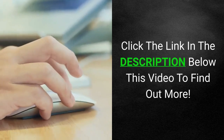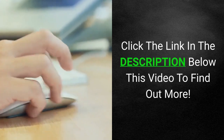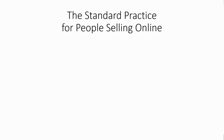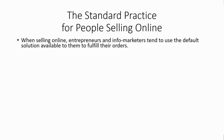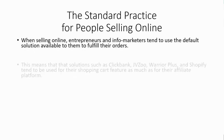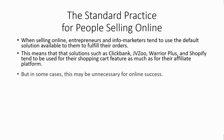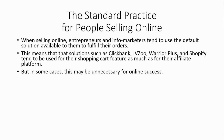Click the link in the description below this video to find out more about how to sell and fulfill your products online without using an affiliate network. When selling online, entrepreneurs and info marketers tend to use the default solution available to them to fulfill their orders. This means that solutions such as ClickBank, JVZoo, Warrior Plus, and Shopify tend to be used for their shopping cart feature.